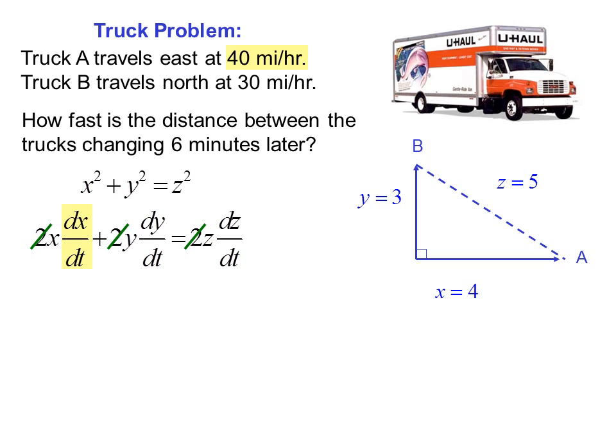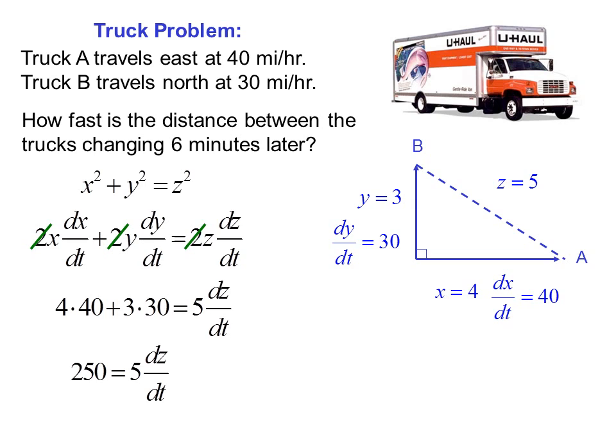Plug in dx/dt as the rate of truck A, which is 40. dy/dt is the rate of truck B, which is 30. dz/dt is, of course, what we're looking for. So filling in everything we know, we've got 4 times 40 plus 3 times 30 equals 5 dz/dt. Or 250 equals 5 dz/dt. 50 equals dz/dt. So the distance between them is increasing at 50 miles per hour.